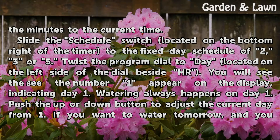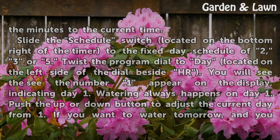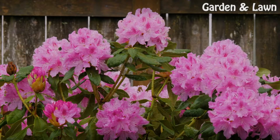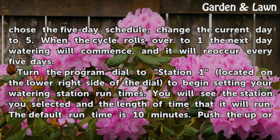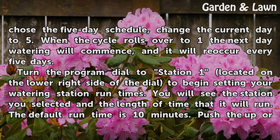Watering always happens on day 1. Push the up or down button to adjust the current day from 1. If you want to water tomorrow and you chose the 5-day schedule, change the current day to 5. When the cycle rolls over to 1, the next day watering will commence, and it will reoccur every 5 days.